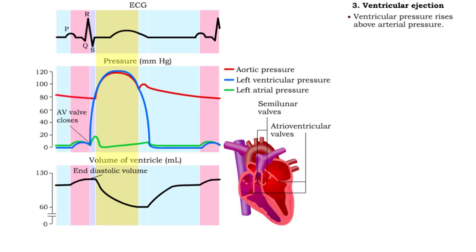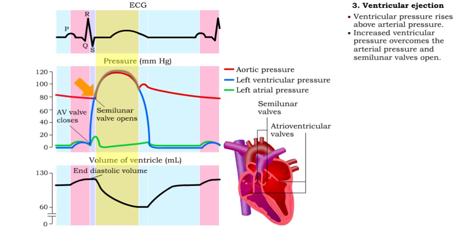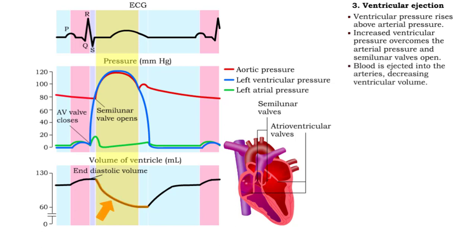Ventricular ejection takes place when ventricular pressure rises above arterial pressure and the semilunar valves open. The valves stay open for about a quarter second. As blood is ejected into the arteries, ventricular volume decreases.